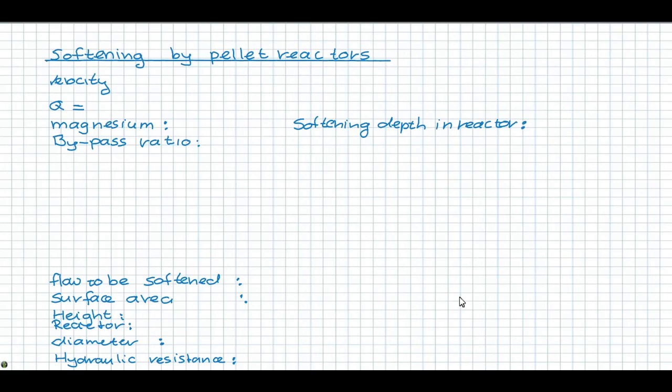For softening we use pellet reactors because of its efficiency and the possibilities to reuse the waste product. The total area of the softening reactors depends on the minimum and maximum velocity allowed, being between 70 and 100 meters an hour.